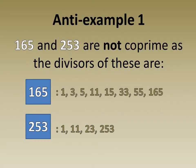In the first anti-example, we see that 165 and 253 are not coprime, as their greatest common divisor is 11.